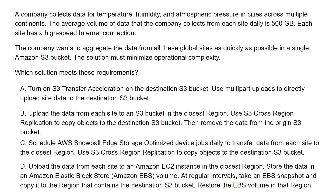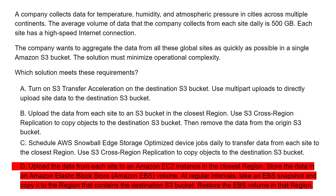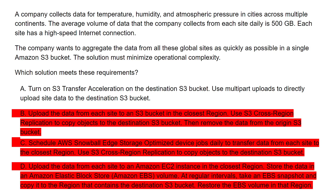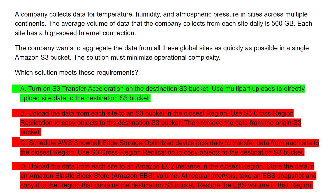Looking back at the question, we can eliminate choice D because it introduces way too much operational complexity through its jumble of steps. We can then eliminate choice C because Snowball needs at least 7 days for device shipment, which delays the uploading too much and therefore doesn't meet the speed requirement. We can eliminate choice B because it involves a middle layer — it first uploads data to an S3 bucket in the closest region, adding unnecessary operational complexity. This means A is our correct answer, as it is the only answer left standing. This method is called the process of elimination, and it is very useful for answering multiple choice questions.